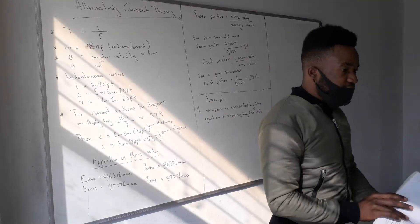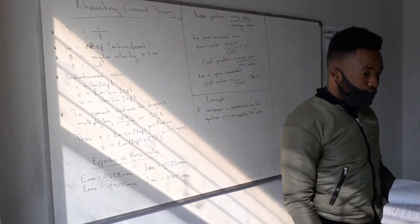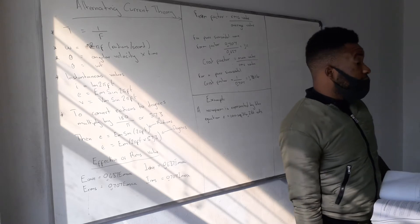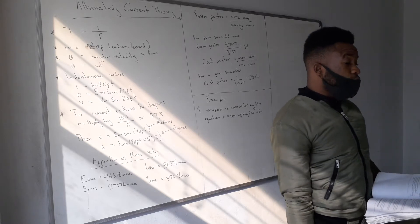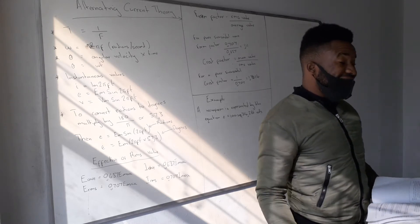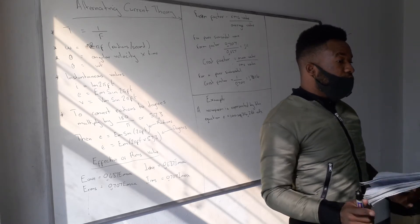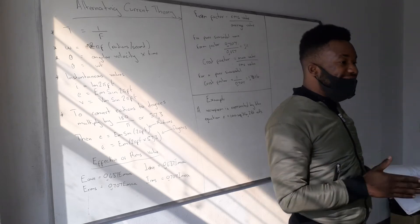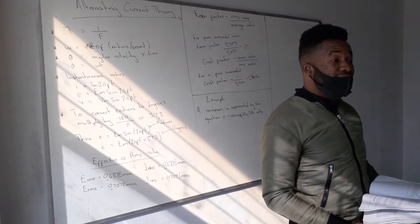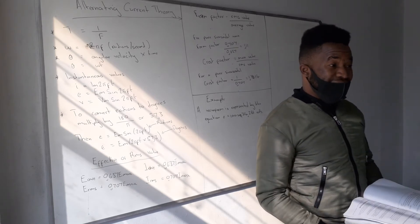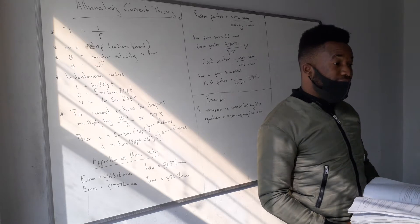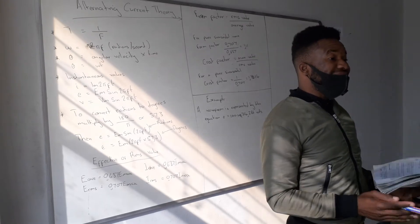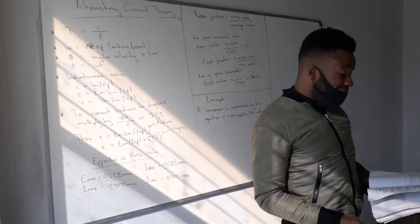Okay, Chapter 6: Alternating Current Theory. Remember, you once did what we call Direct Current Theory. When they're talking about direct current theory, it is a current which moves in one direction — it only moves in one direction.